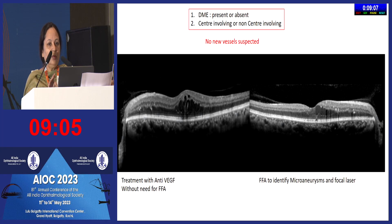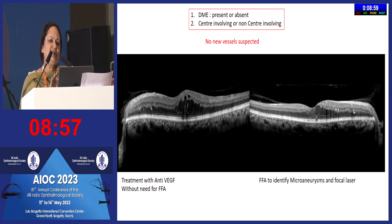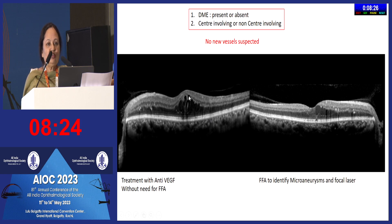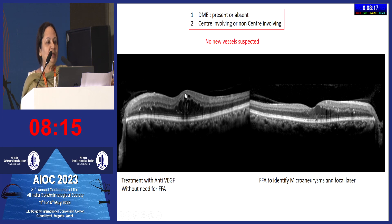When you see macular edema on OCT, first check whether there is any traction. If traction is present, do not think of medical management — refer directly. If there is no traction, the next question is: is it center-involving or not? Center-involving macular edema requires anti-VEGF therapy, while non-center-involving macular edema may be managed with focal laser alone, without repeat injections.